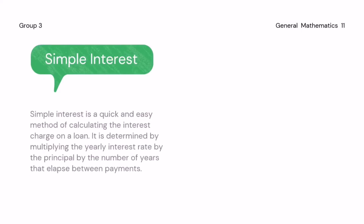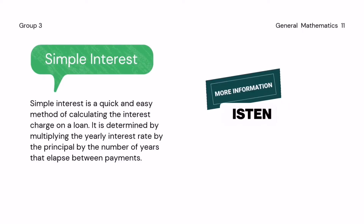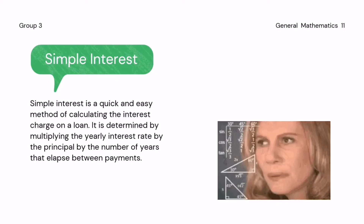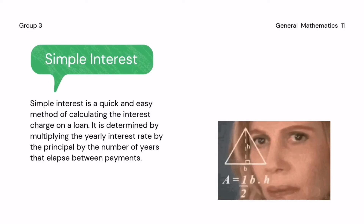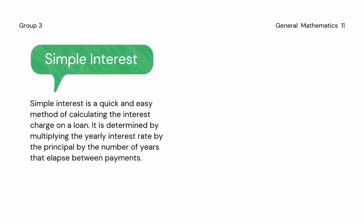Simple interest is a quick and easy method of calculating the interest charge on a loan. It is determined by multiplying the yearly interest rate by the principal by the number of years that elapsed between payments. This type of interest usually applies to automobile loans or short-term loans, although some mortgages use this calculation method. Generally, simple interest paid or received over a certain period is a fixed percentage of the principal amount that was borrowed or lent.